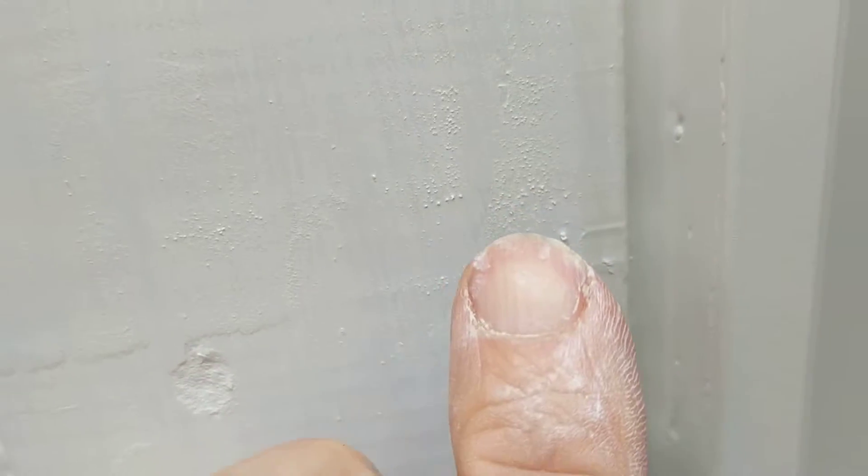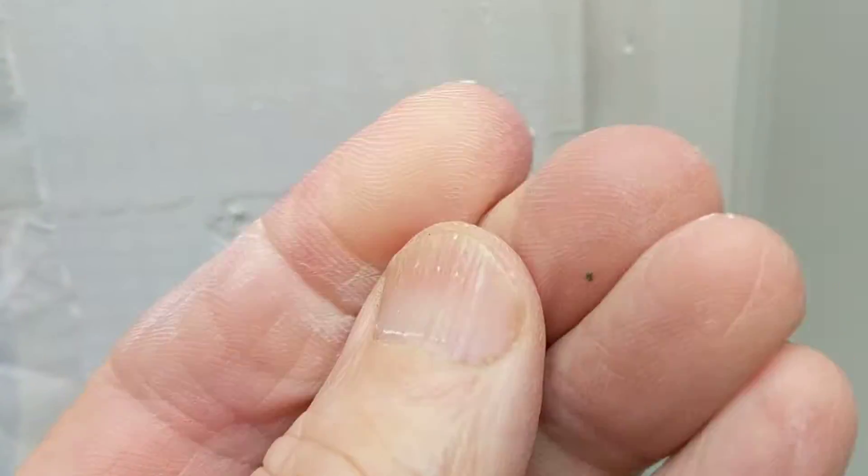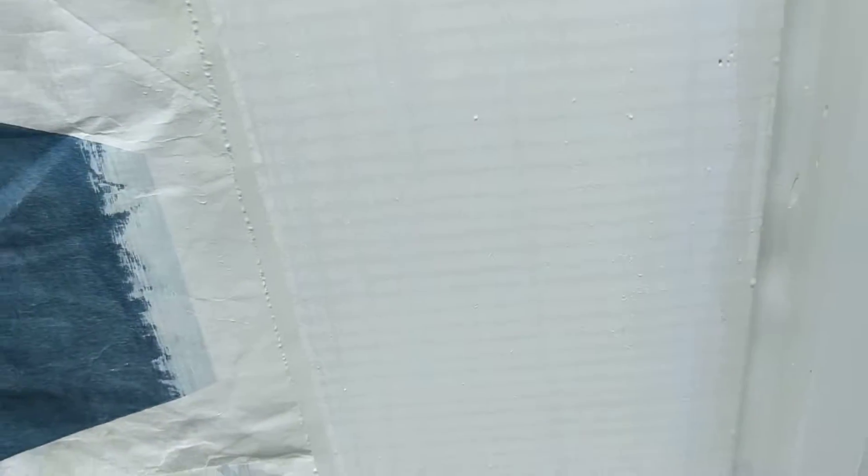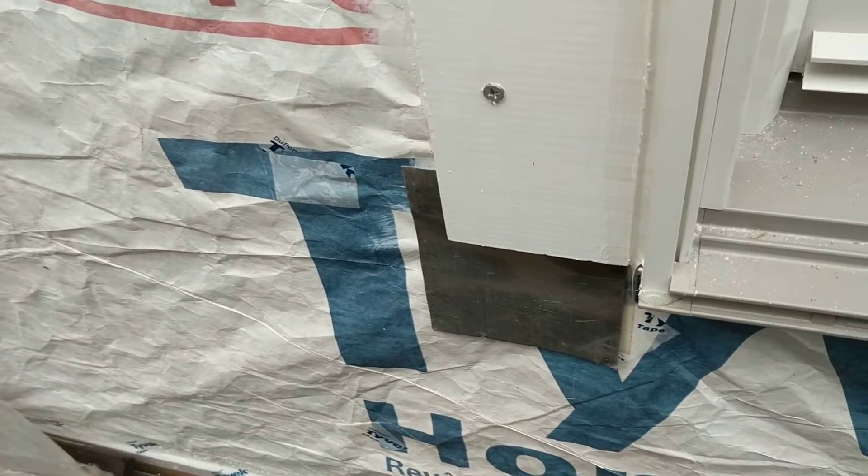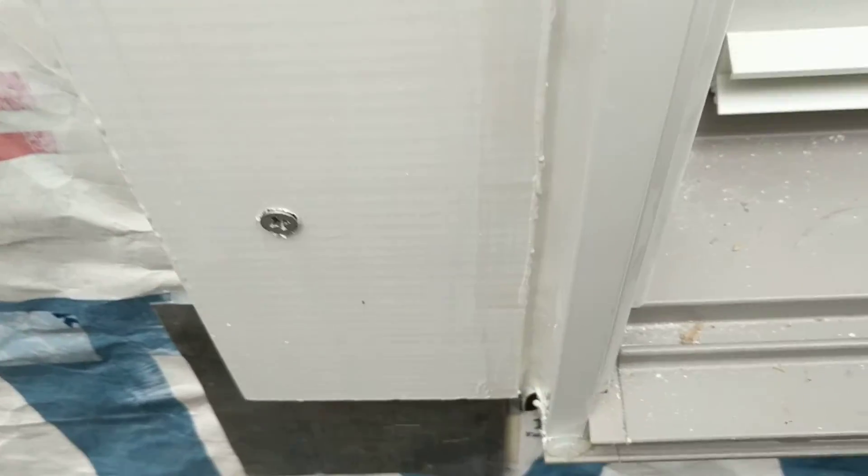I scraped off the residue on this wood, but because this caulk is very sticky, there's still a residue. I'll probably just have to put another coat of paint over this. I should have probably caulked it before I put the top coat of paint on, but I didn't.